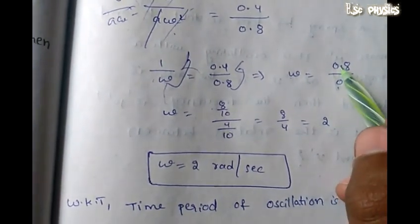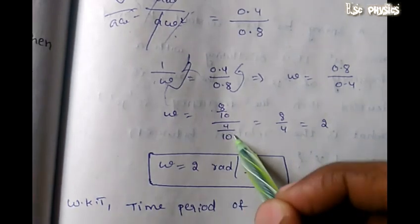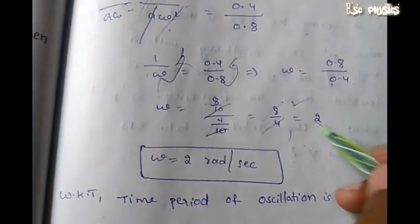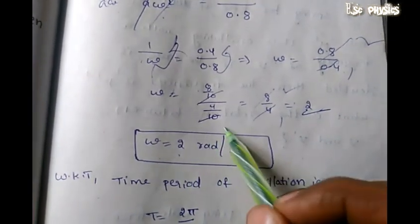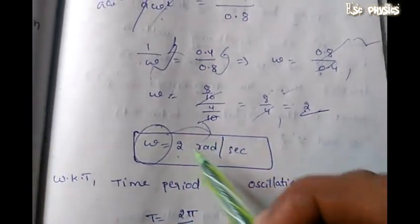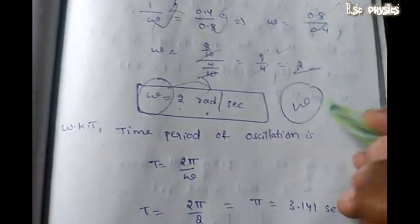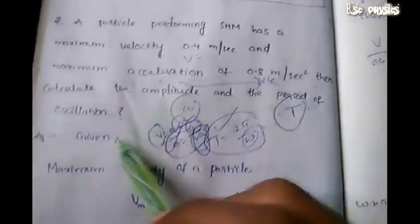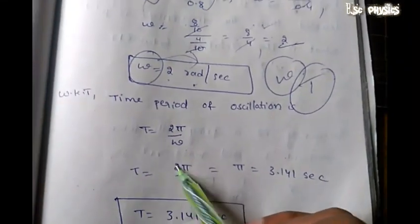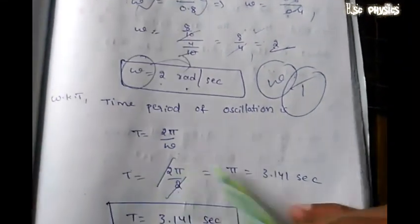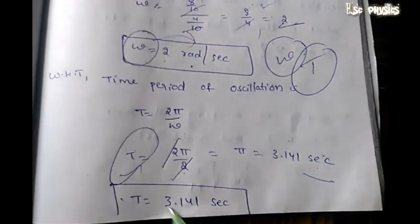So omega equals 2 radians per second. Then the time period T equals 2 pi by omega, so T equals 2 pi divided by 2, which gives T equals pi, approximately 3.14 seconds.